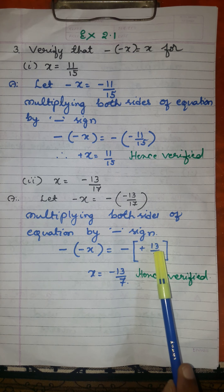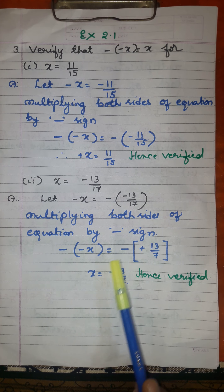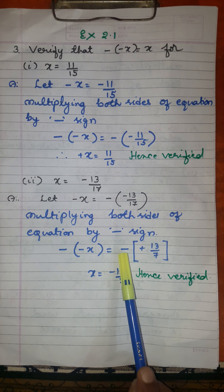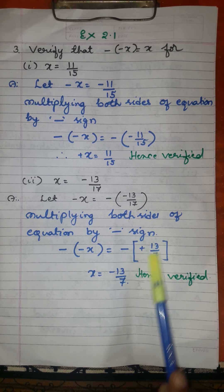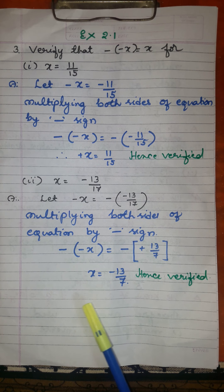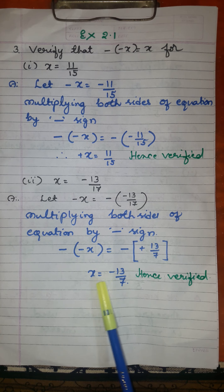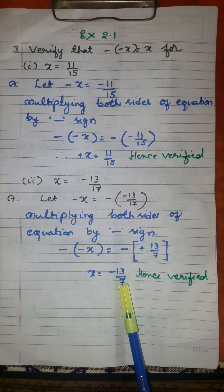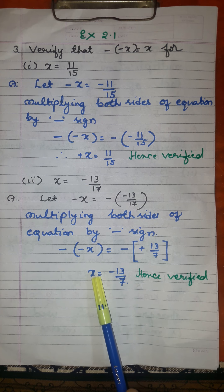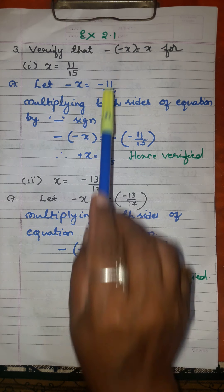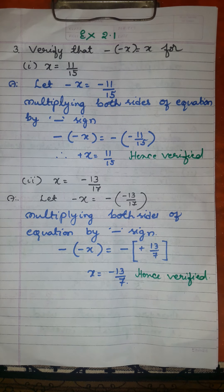So I will write it as plus 13 over 17. So minus into minus is plus X. That is equal to minus into plus minus 13 over 17. So what is the value of plus X here? Minus 13 over 17. What we have got? Minus 13 over 17. So minus 13 over 17 is X. Hence, we have verified minus of minus X is equal to X.